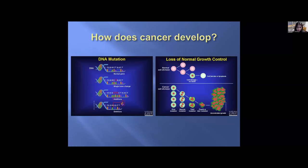How does cancer develop? It starts with a DNA mutation, causing loss of normal growth control. Cancer cell division continues through a first, second, third, fourth mutation, and so on, resulting in uncontrolled growth because cell damage occurs with no repair mechanism. Typically, cell damage would trigger either repair or cell death, but in cancer, the cell continues to divide.